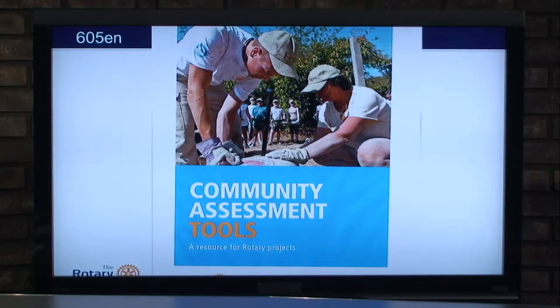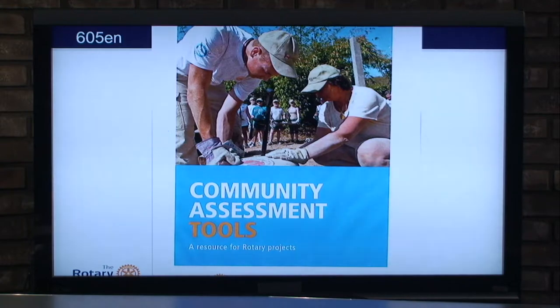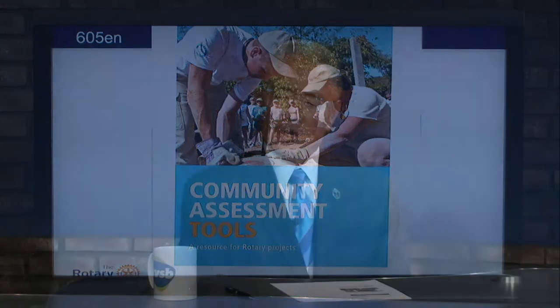One booklet the Rotary Foundation offers is this community assessment booklet. You'll find it online — the number is 605EN, where EN stands for the English version. In this book you'll find pretty much everything you need as far as tools. What you won't find there are some of the points that you as Rotarians will be able to benefit from in the long run.